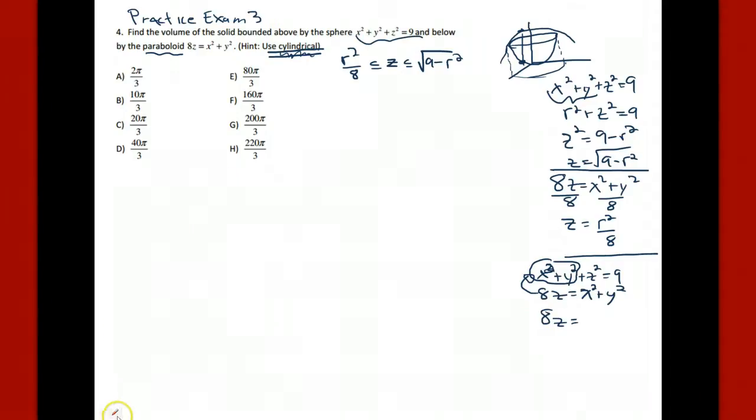We have 8z plus the z squared should be equal to 9. That's a quadratic. z squared plus 8z minus 9 is 0. That factors to be z plus 9, z minus 1. This gives us a negative value of z, which we can disregard. z equals negative 9. This gives us z equals 1. It's at the plane z equals 1 where these will intersect each other.